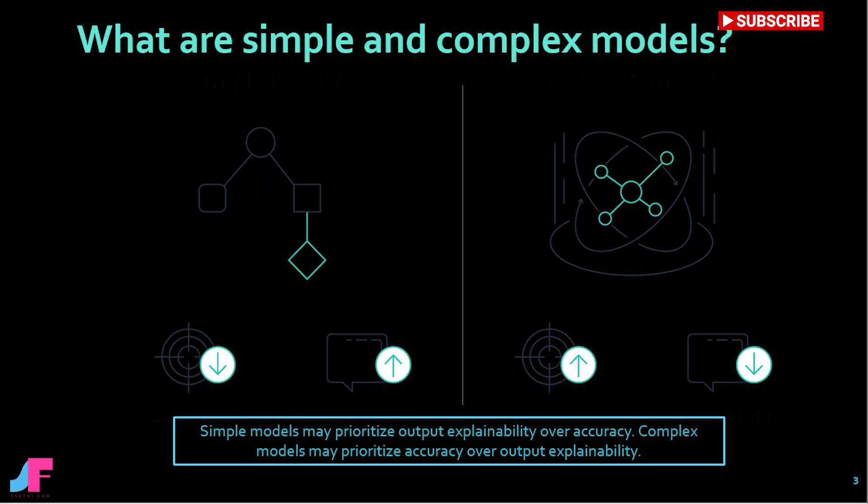What are simple and complex models? Simple and complex ML models differ when balancing a model's accuracy — the number of correctly predicted data points — and a model's explainability, meaning how much of the ML system can be explained in human terms. The output of a simple ML model may be explainable and produce faster results, but the results may be inaccurate. The output of a complex ML model may be accurate, but the results may be difficult to communicate.